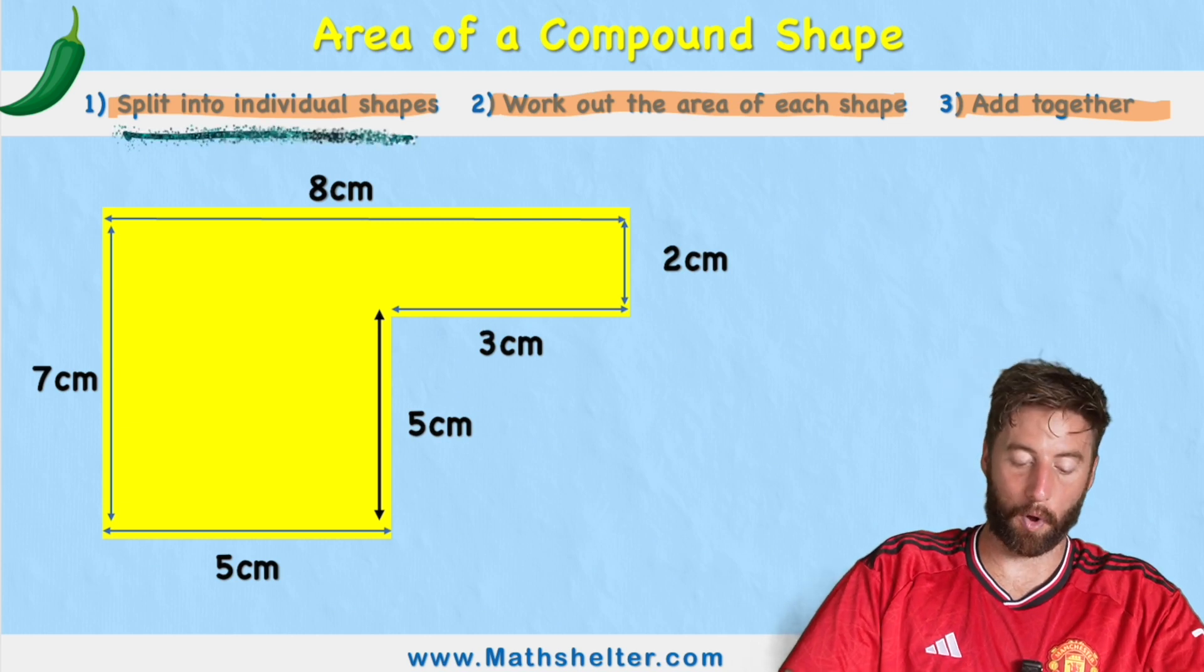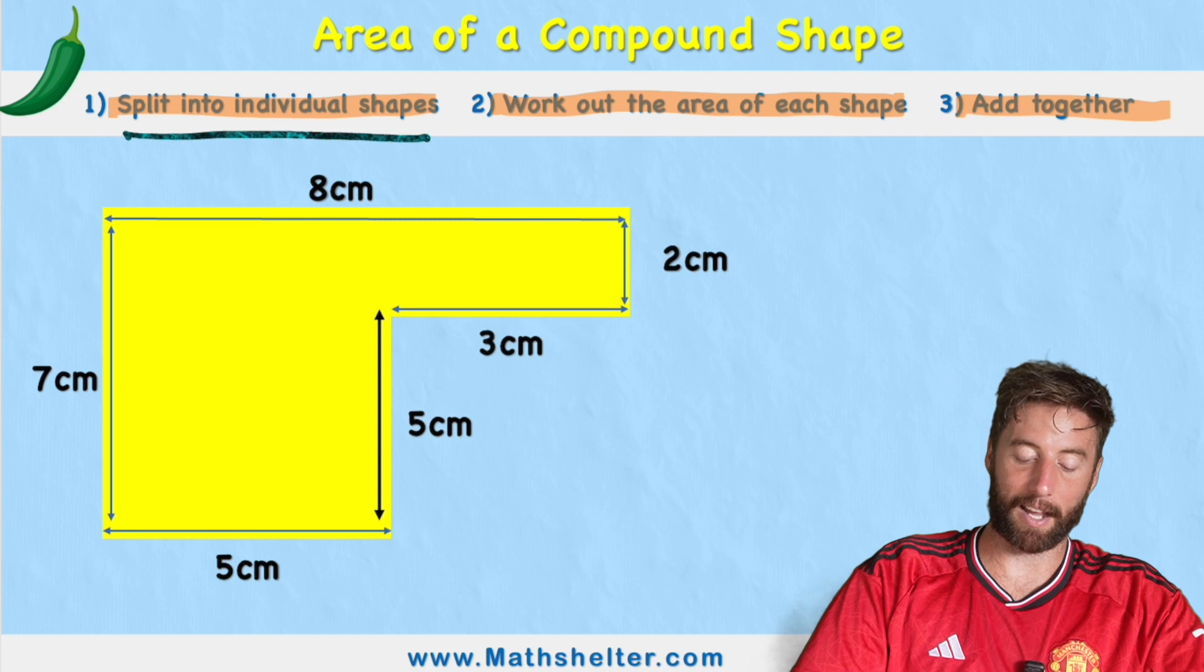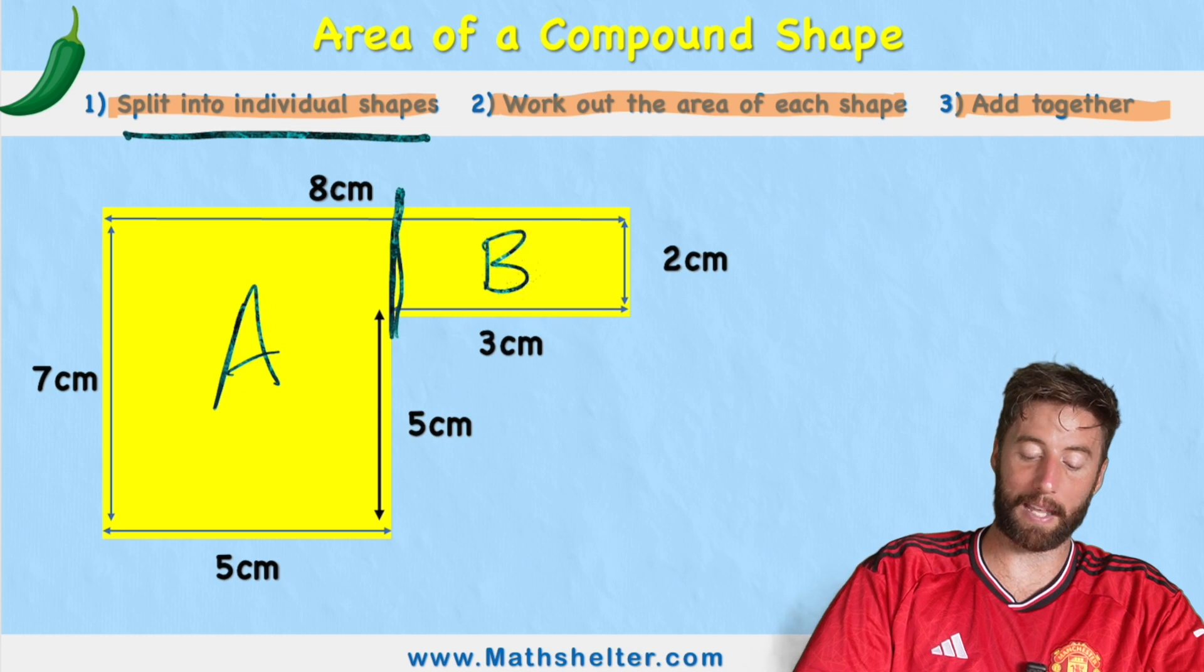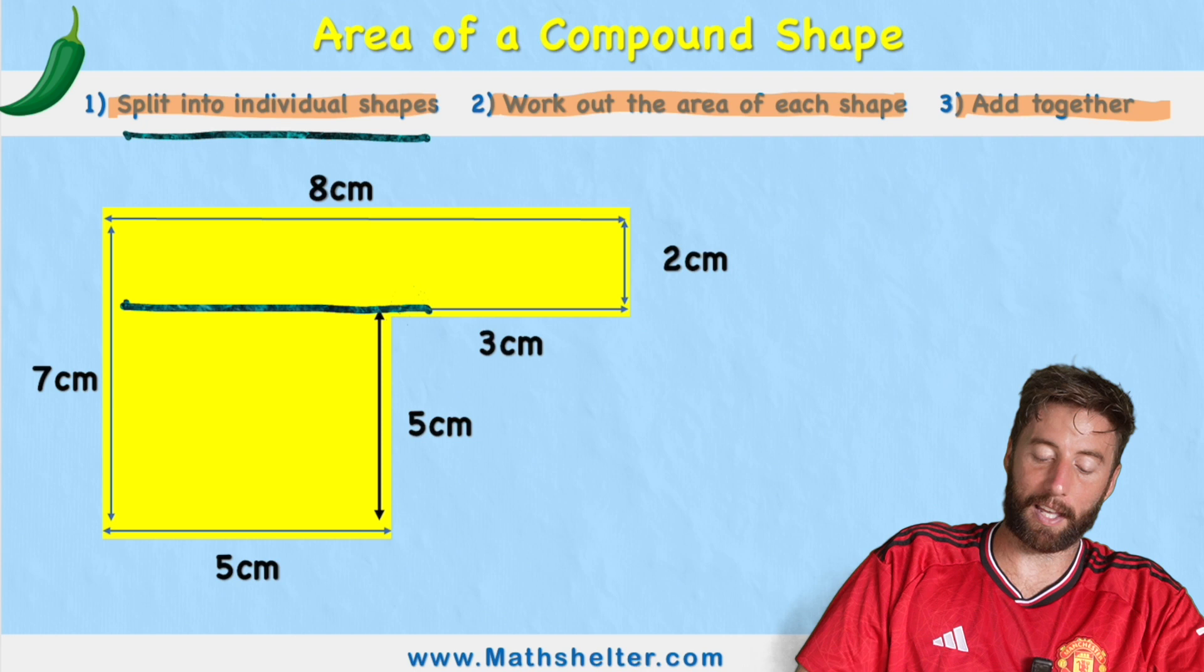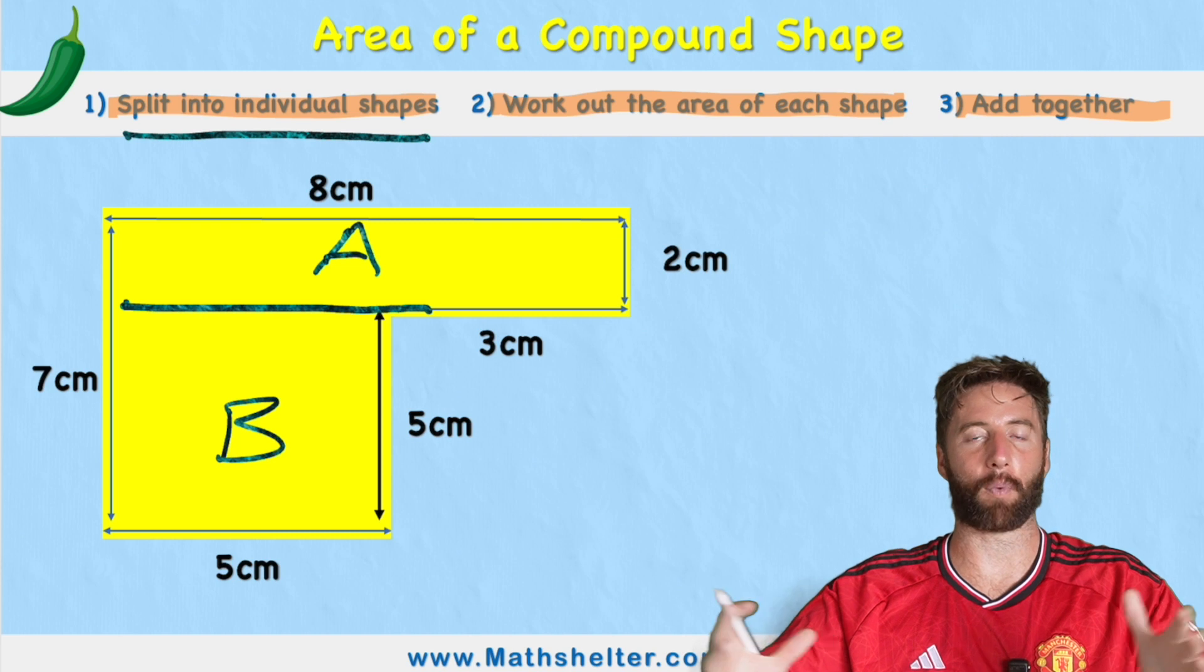So let's start with step one, which was to split these into individual shapes. So I can see that I have two rectangles as we said, and I could either cut it just here and call this A and this B, or what I could do is I could split it along here and call this one A and this one B. It doesn't matter, we're going to get the same at the end when we add it together.